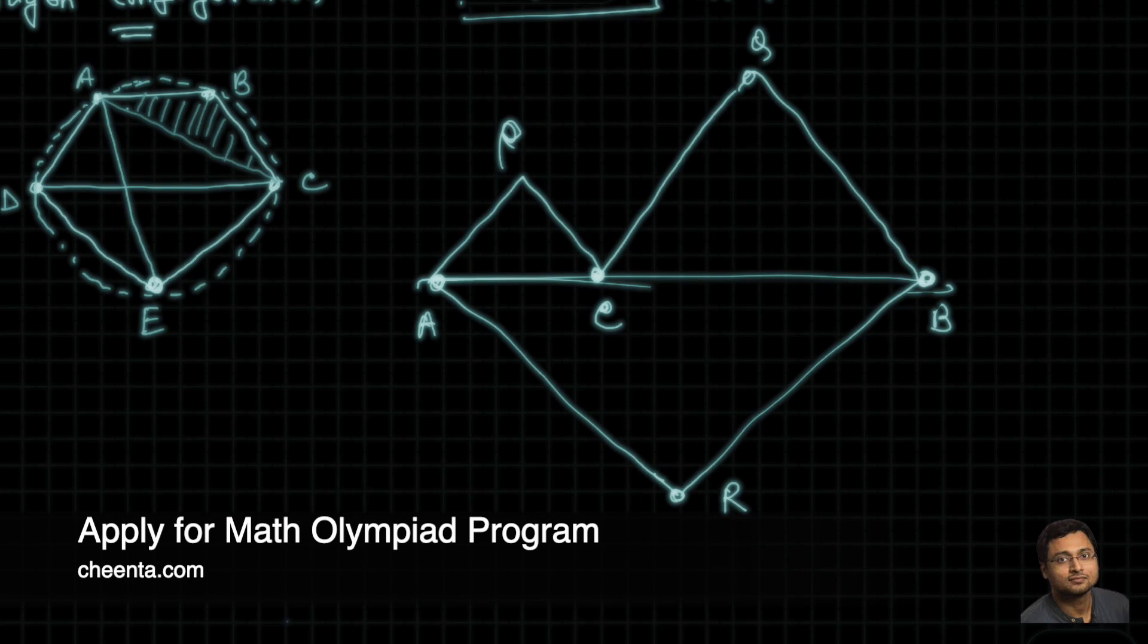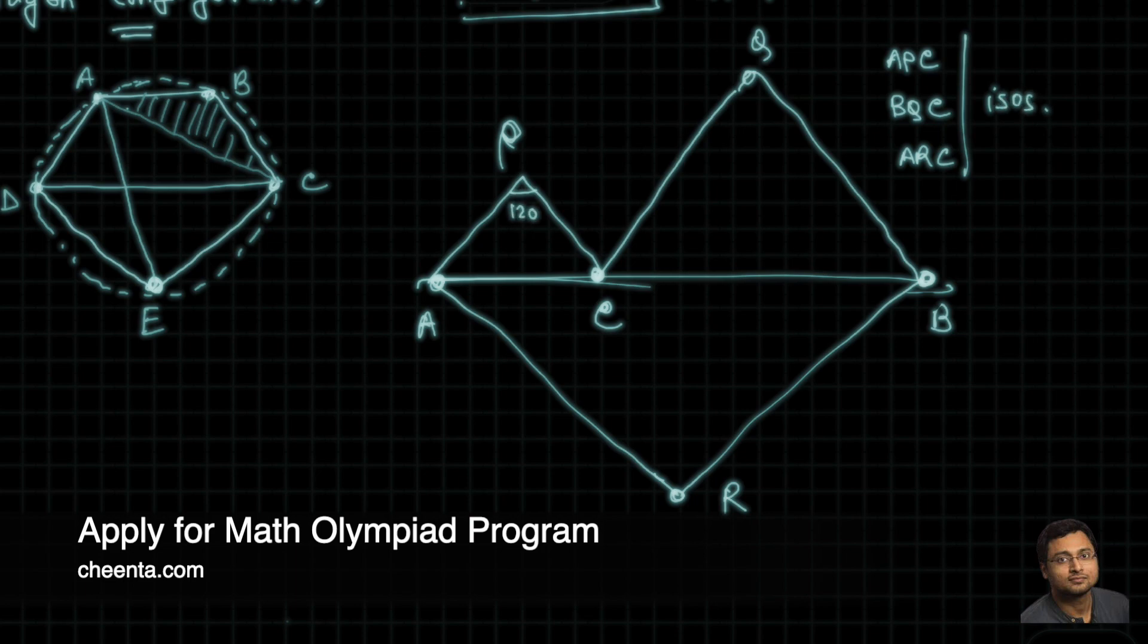So what is given? It's given that APC, BQC and ARC, they're all isosceles. And the angles right here are 120 degrees. All of these three angles. Angle P, angle Q, angle R.